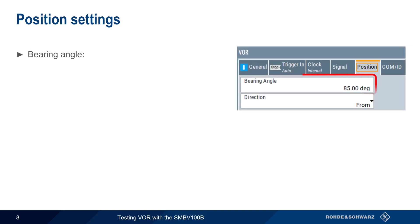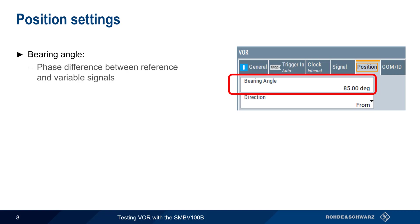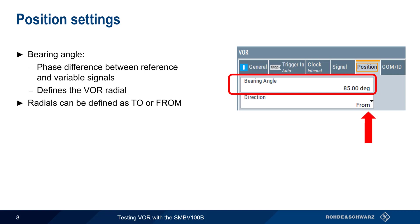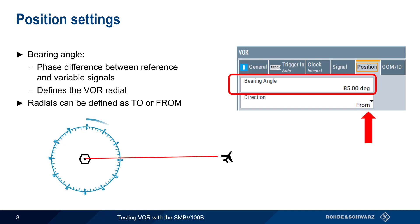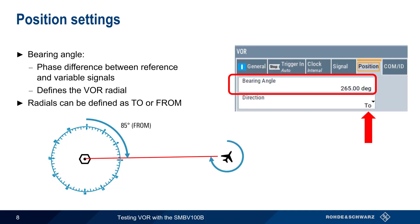The Position tab contains the bearing angle parameter, which is the most commonly changed parameter in VOR testing. Recall that bearing angle is the phase difference between the reference and variable signals, and that this difference defines the VOR radial. If we're on the 85 radial, the difference in phase between the reference and variable signals is 85 degrees. Note, however, that we can designate a radial as either to or from. For example, this aircraft is on the 85 from radial because the angle from the VOR to the aircraft is 85 degrees. We could also express this as the angle from the aircraft to the station, which would be 85 plus 180, or 265 degrees. The signal produced by the SMBV is exactly the same in both cases.